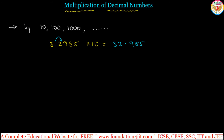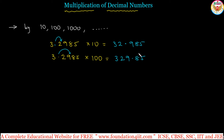Next, take the same example: 3.2985 multiplied by 100. The decimal place will shift two places, giving 329.85, and so on. This is one category — a decimal number multiplied by 10, 100, 1000, and so on. As many zeros as there are, that many places the decimal point moves to the right.